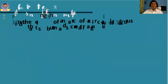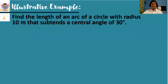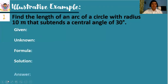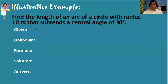Let's have illustrative examples. Find the length of an arc of a circle with radius 10 meters that subtends a central angle of 30 degrees. We can use the GUPSA format: given, unknown, formula, solution, and then your final answer. Follow this format also in solving for your modified assessment. For our given, we have r, the radius, is 10 meters. Next given is our theta, which is 30 degrees.